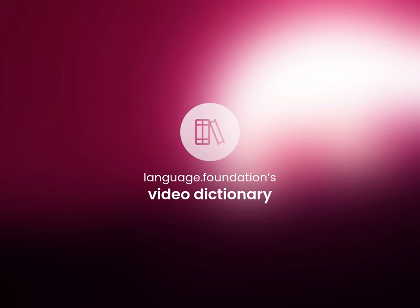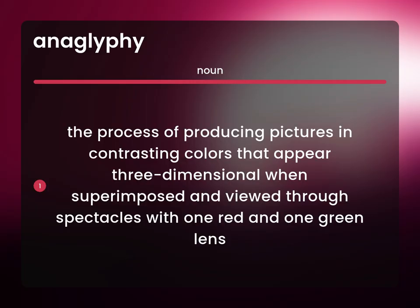Language.Foundation's Video Dictionary, helping you achieve understanding. The process of producing pictures in contrasting colors that appear three-dimensional when superimposed and viewed through spectacles with one red and one green lens.